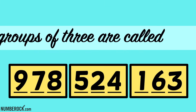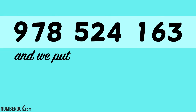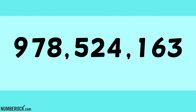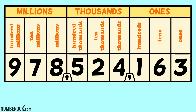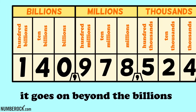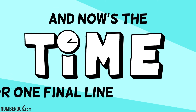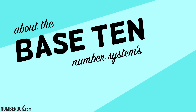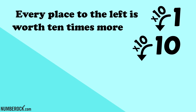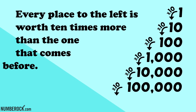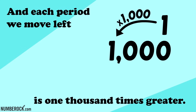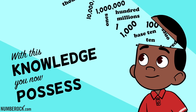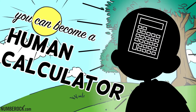The digits in big numbers are in groups of three places. Groups of three are called periods and we put commas in the spaces. From right to left we can label them: ones, thousands, millions — and for a large enough number it goes on beyond the billions. Every place to the left is worth ten times more than the one that comes before, and each period we move left is one thousand times greater. With this knowledge you now possess, you can become a human calculator.